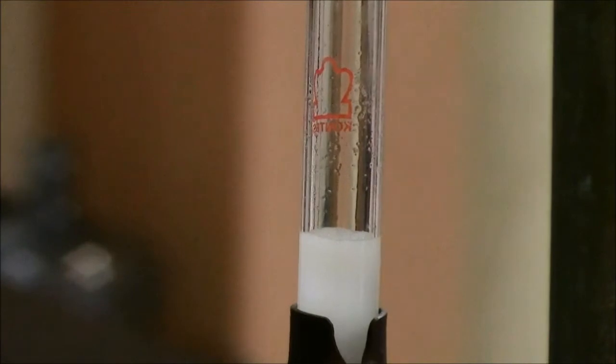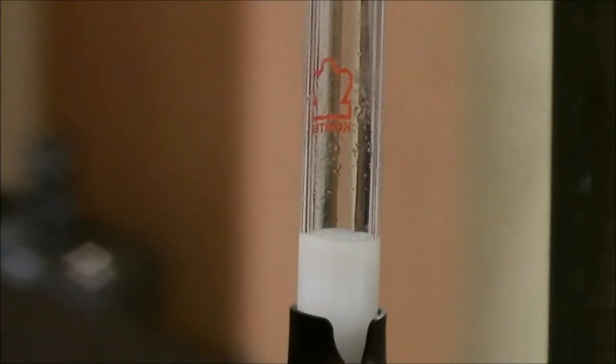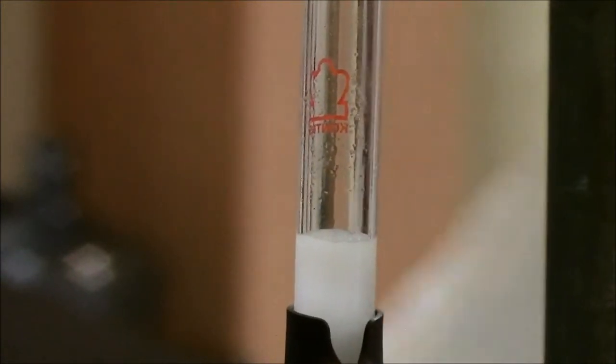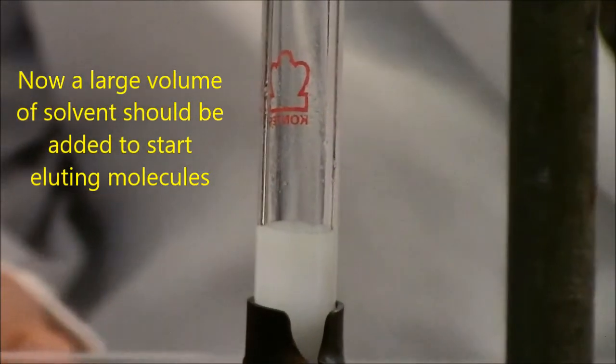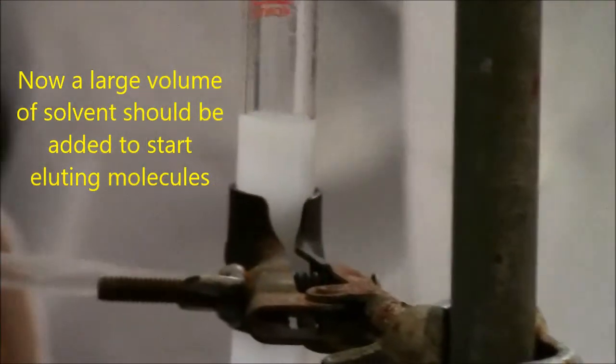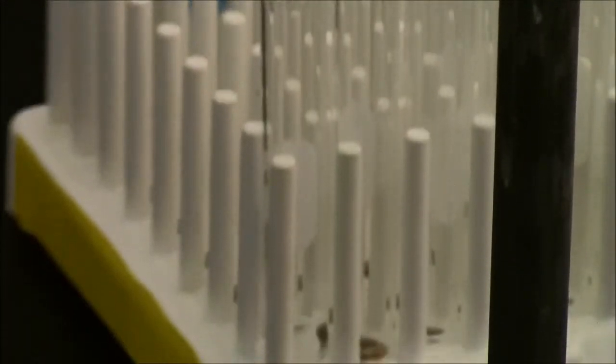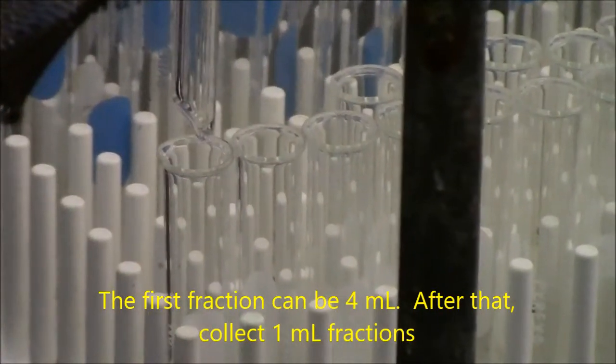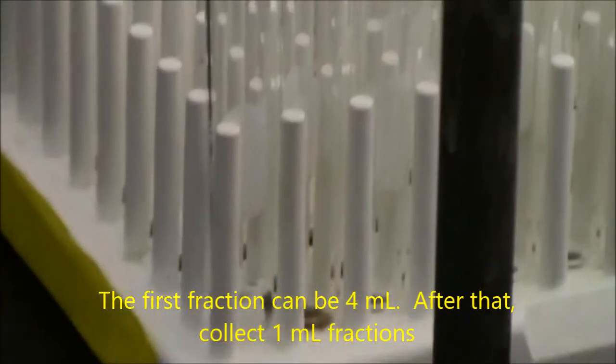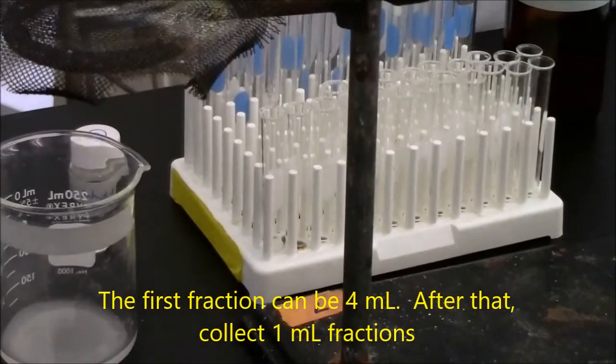Now you should be able to load a bigger solvent on the top, and you start collecting fractions seriously. The first one won't have anything in it, so the first one could be a big fraction. It could be half a test tube's worth. That would be a reasonable thing to start with.